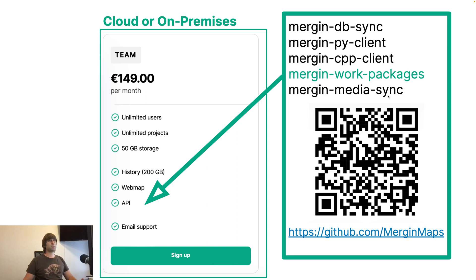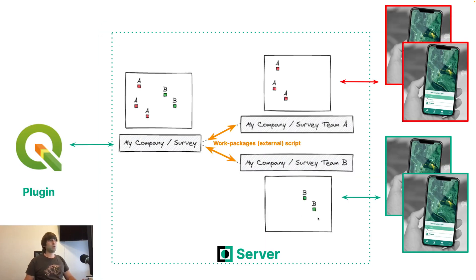Mergin Work Packages leverages the MerginMaps API and is available for any team subscription or on-premises installation. It is open-sourced, so feel free to open our GitHub and look at the code. Imagine you are a GIS admin with a very big project with many points and many survey teams. You want to select a few points based on location or attribute and assign them to team A and team B. Mergin Work Packages can help a lot with this task — it can automatically split your project into two sub-projects in a MerginMaps workspace, which can afterwards be assigned to various teams.